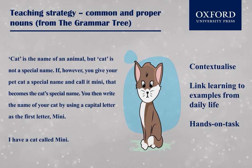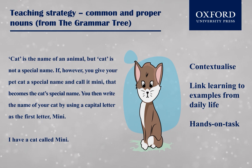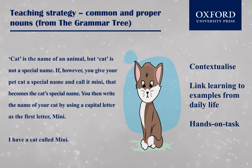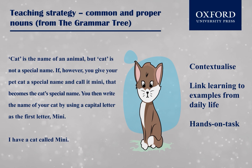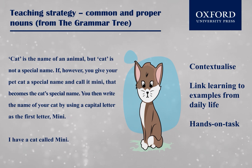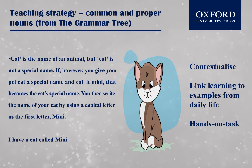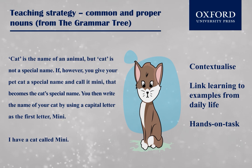Then they move on to reflection and observation on what they have learnt, and try to conceptualize the grammar point — common and proper nouns — in different ways by applying it to, for example, their own names or the names of different kinds of animals, plants, trees, oceans, rivers, and so forth. Lastly, they go on to experimenting with what they have learnt by completing the hands-on tasks or exercises given to them in the book.